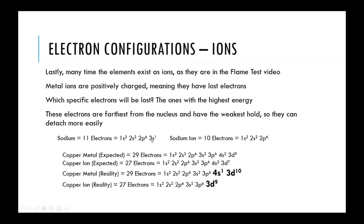Now it's completely stable. You'll notice when an ion is very stable, all of the subshells are completely filled in. Each of the S subshells has two electrons, and the P subshell has six electrons — they're completely filled.